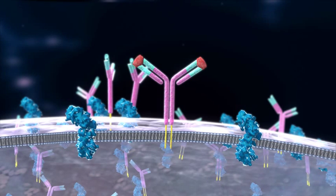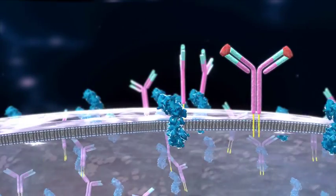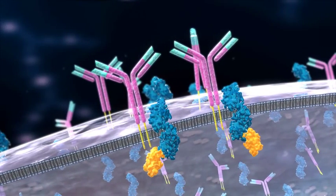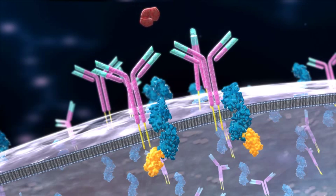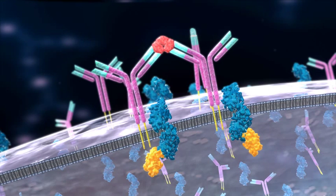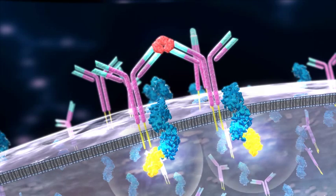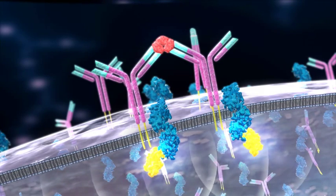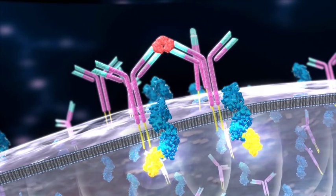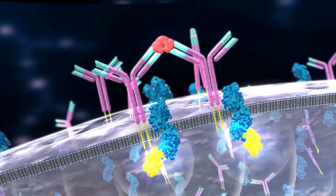When an antigen comes along that is able to bind to the antibody molecule in a specific way, signaling pathways are triggered within the B cell. These signals stimulate the B cell to begin dividing to produce multiple B cells, all of which are capable of producing antibody proteins that bind to the triggering antigen.